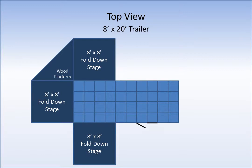Next, we'll add in a wood platform to connect the fold-down stages. And we'll add another one on the other side. This gives us a convenient half octagon to accommodate quite a few musicians.